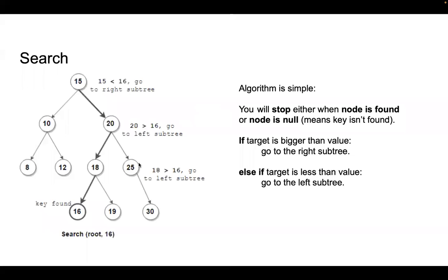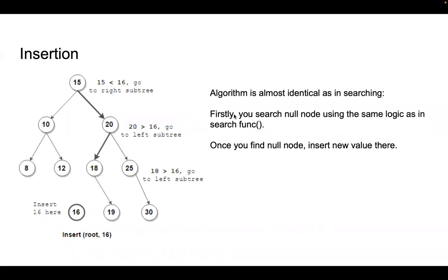Let's move to the next function: insertion. The algorithm is almost identical to searching. The very first thing we do is find a free, empty null node. We want to insert our new node at that position. In order to find that empty node, we use the same logic as in searching. In searching you look for a particular value, but in insertion you first find an empty node. For example, imagine 16 is not yet part of the Binary Search Tree and we want to insert it.